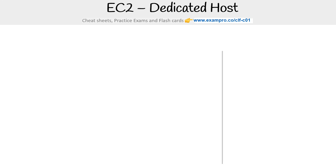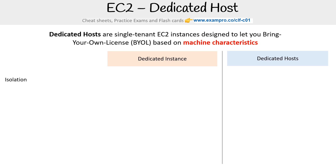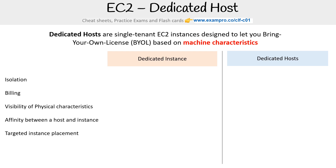We talked about dedicated instances and hosts a little bit, but let's make that distinction very clear. Dedicated hosts are single-tenant EC2 instances designed to let you bring your own license — BYOL — based on machine characteristics. We'll compare the dedicated instance to the dedicated host across isolation, billing, physical characteristics, visibility, affinity between a host and instance, targeted instance placement, automatic instance placement, and adding capacity using allocation requests.